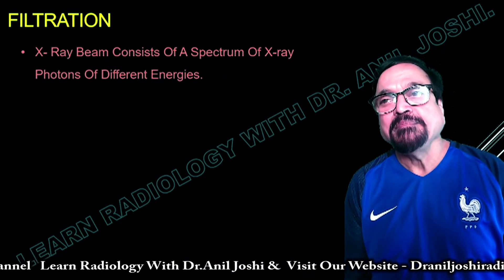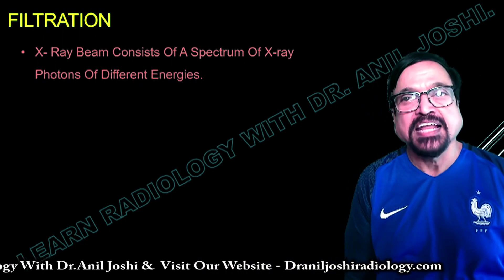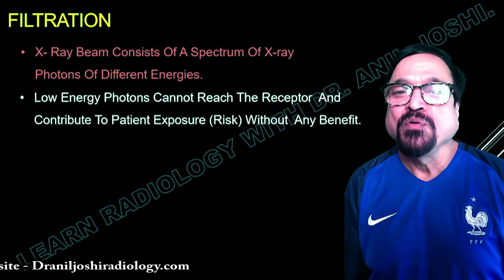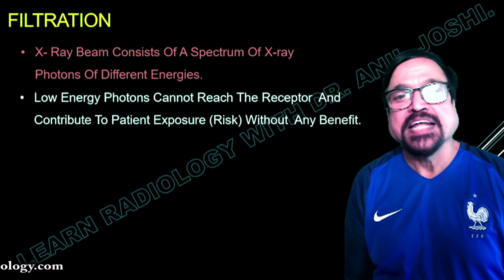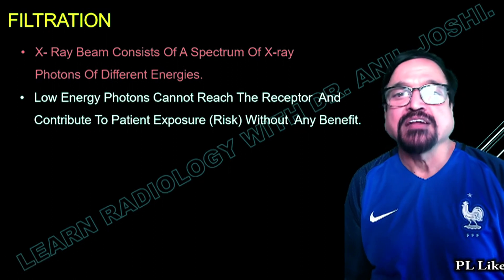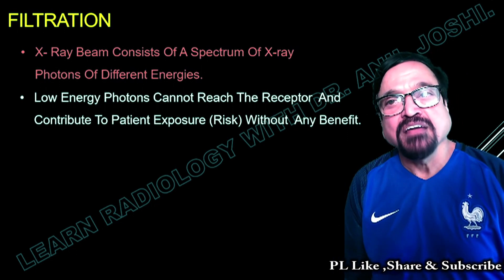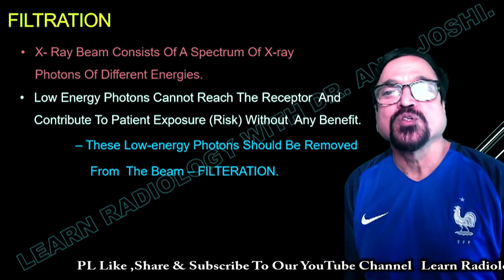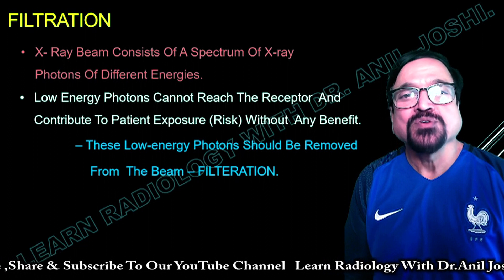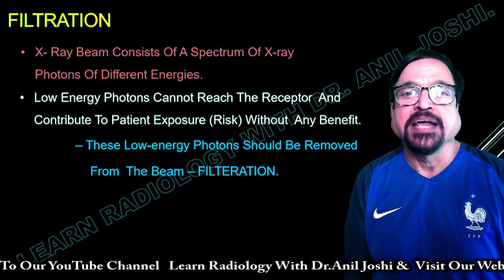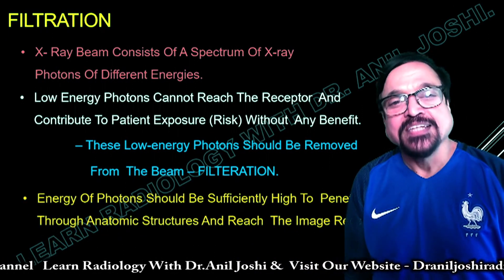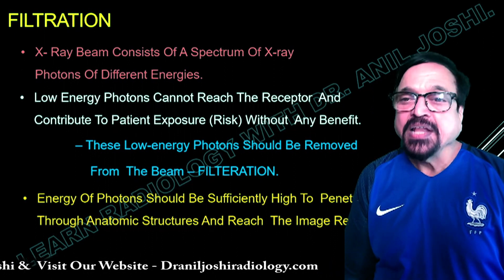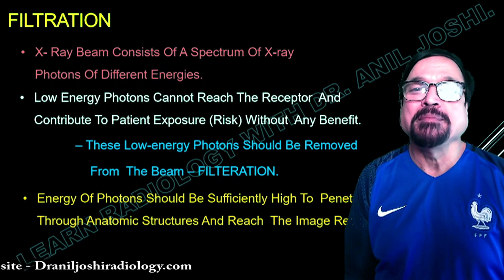What is filtration? An X-ray beam consists of a spectrum of photons of different energies. Low energy photons cannot reach the receptor and only contribute to the patient's exposure without any benefit. If we need adequate KV to penetrate a body part — for example taking a chest X-ray where the photon must travel from posterior to anterior aspect — there must be enough energy to reach the cassette, film, or DR panel. Along with these, low energy photons are also present. These low energy photons should be removed from the beam through filtration, because they do not contribute to good image quality but may contribute to noise. In filtration, we remove the low energy X-rays and keep only the required energy photons so that a good image is achieved without noise.